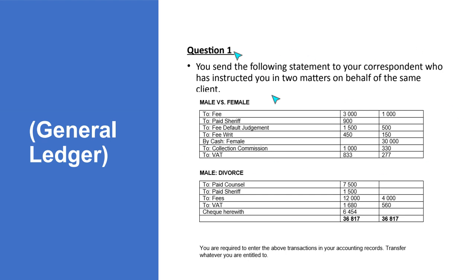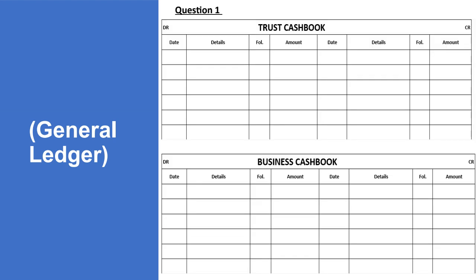Starting with the first statement: I received cash while performing on this matter. I received cash from Female — remember, our client is Male. Female paid us thirty thousand, so we need to account for this. We must show that we received money from Female even though our client is Male.